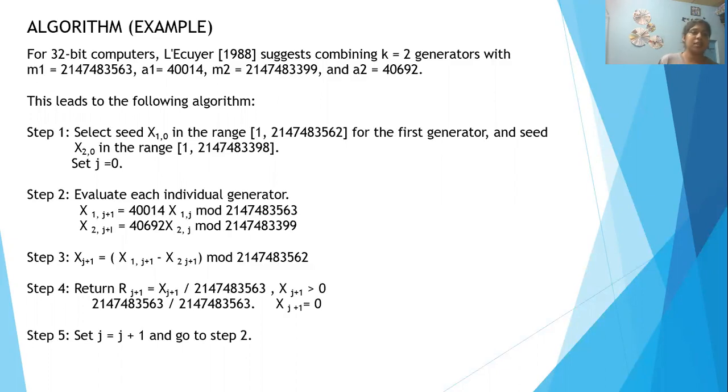with m_1 equal to 2147483563 and a_1 equal to 40014, and for the second generator m_2 equals 2147483399 and a_2 equals 40692. The algorithm is as follows: